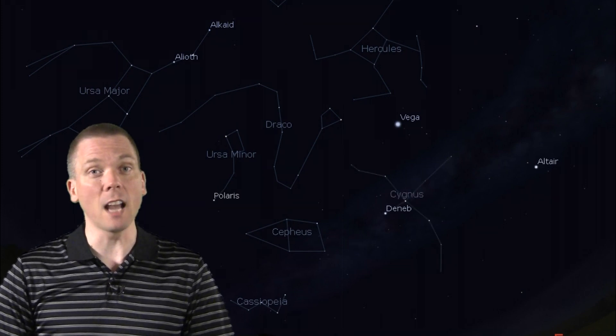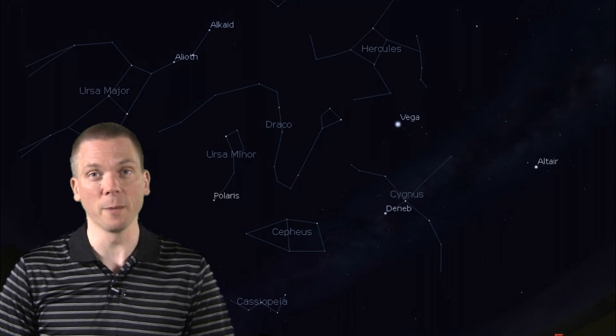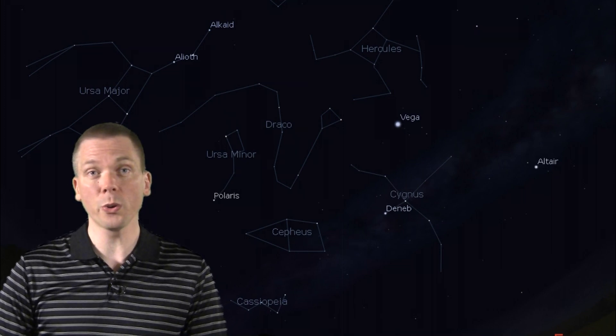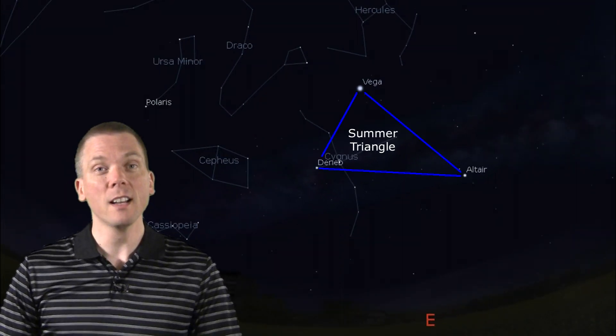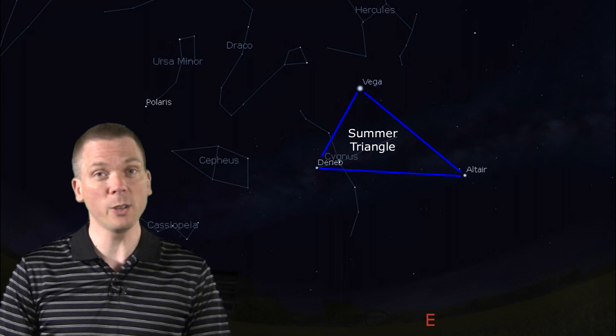First magnitude Deneb lies at the upper edge of the galaxy's plane here, and is at the top of the Northern Cross set of stars within Cygnus the Swan, a much larger constellation that extends into the informally named Summer Triangle of Stars, which includes Deneb.